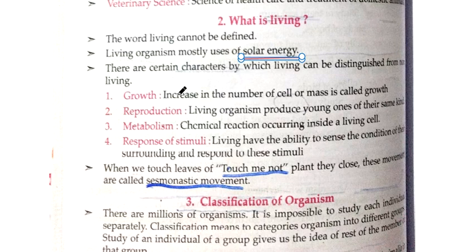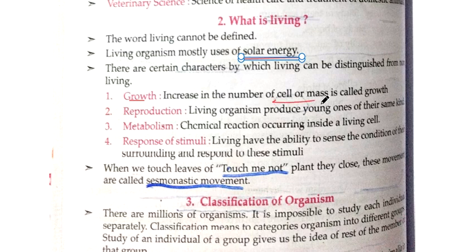The first characteristic which distinguishes living beings from non-living beings is growth. Most living beings show growth in their cells or mass. When there is an increase in the number of cells or increase in the mass of an organism, it is called growth.